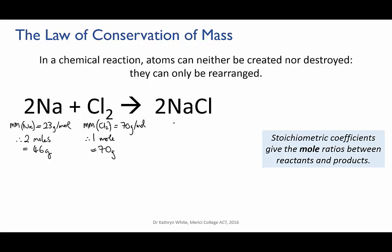For the product, the molar mass of sodium chloride is 58 grams per mole, and we produce two moles of it, so the mass produced is 116 grams. Let's check that we haven't broken the law of conservation of mass. You can see that we have 116 grams of reactants in total, which equals the mass of the product, so that's okay.